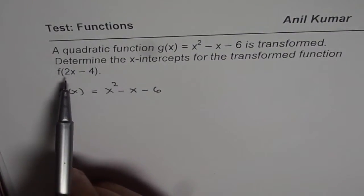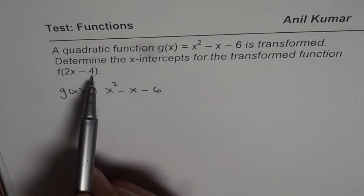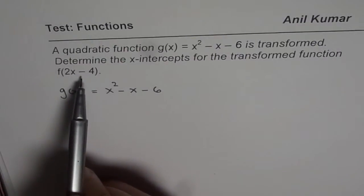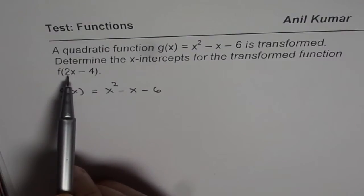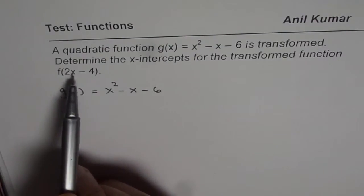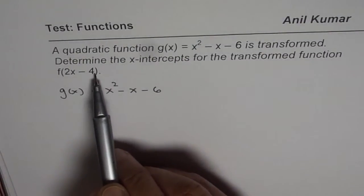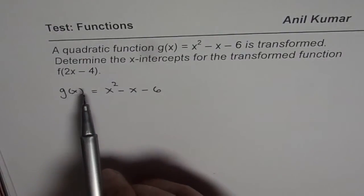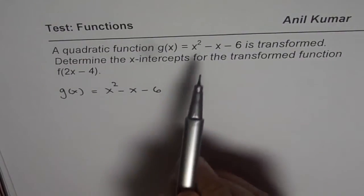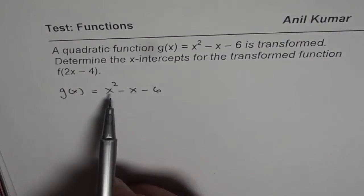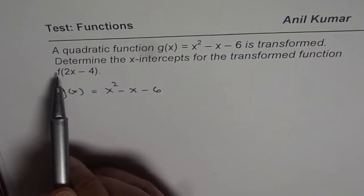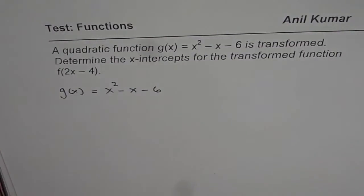Now, f(2x - 4) involves horizontal translations and compression by a factor of 2. That means the x-value changes while y remains the same. So if I find x-intercepts of g(x), I can actually find x-intercepts of f(2x - 4) as well. Let us find x-intercepts for g(x).